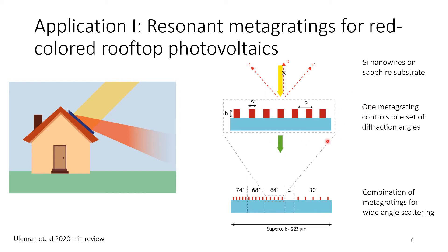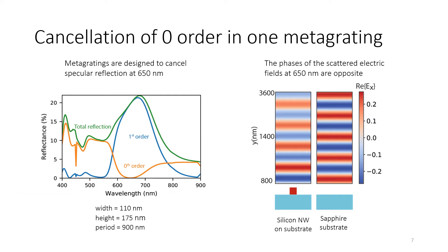We combine several of those metagratings into one array — a supercell metasurface — which reflects light at the resonance wavelength between 30 and 74 degrees. We tune the whole structure for 650 nanometer light, which is in the red wavelength regime. The building blocks are silicon nanowires on a sapphire substrate. Looking at the reflectance spectrum, with a pitch of 900 nanometers, we see that the total reflection peaks in the red wavelength regime and almost all of the reflected light goes into the first reflection order at resonance, while at zero order everything is transmitted. The background comes from the sapphire substrate.